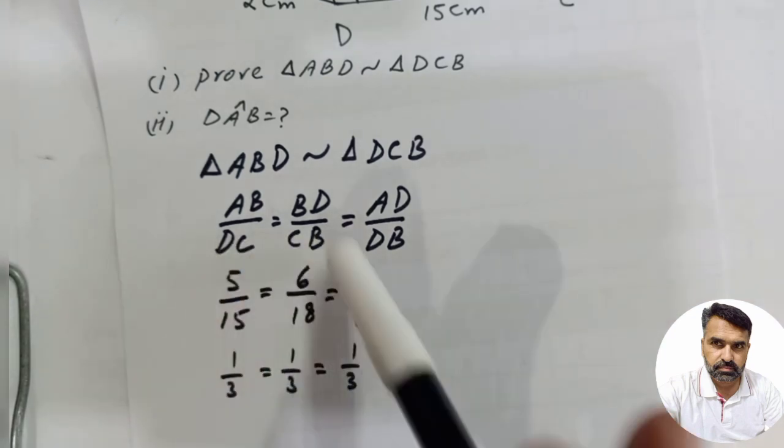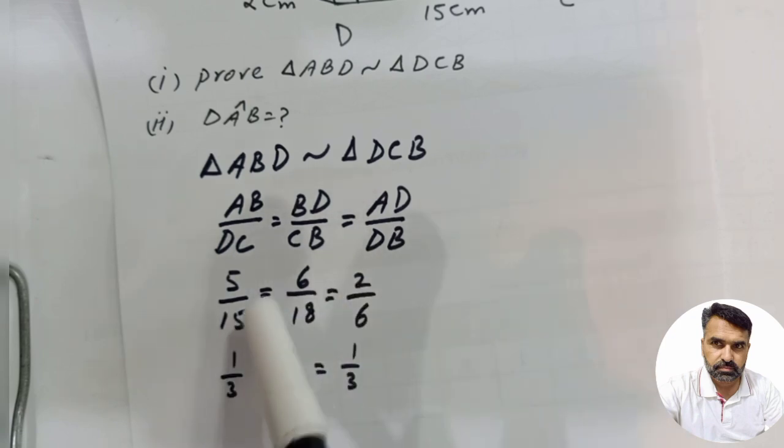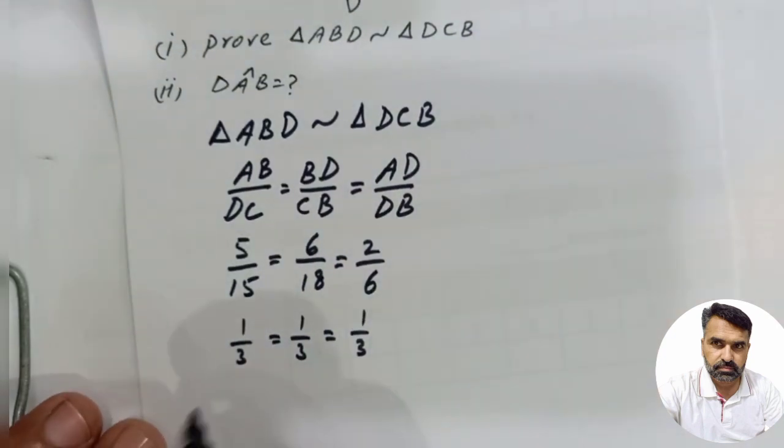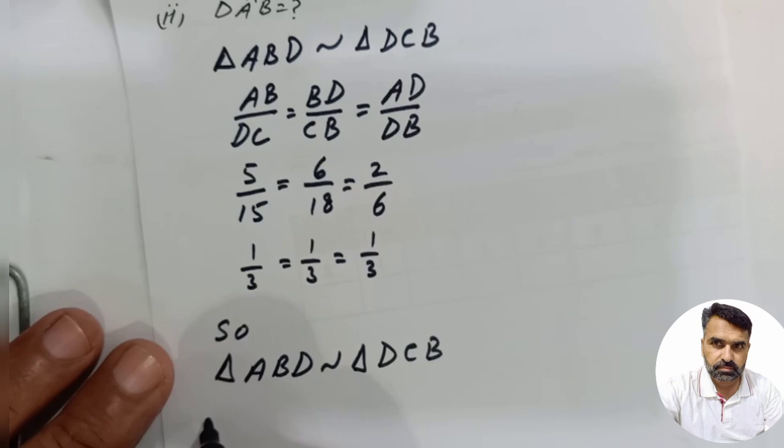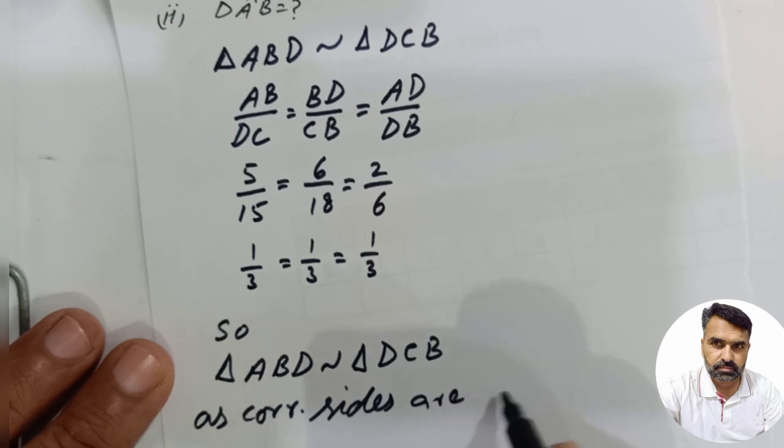The corresponding sides are proportional, which are 1 ratio 3, 1 ratio 3, and 1 ratio 3. So triangle ABD is similar to triangle DCB as their corresponding sides are proportional.